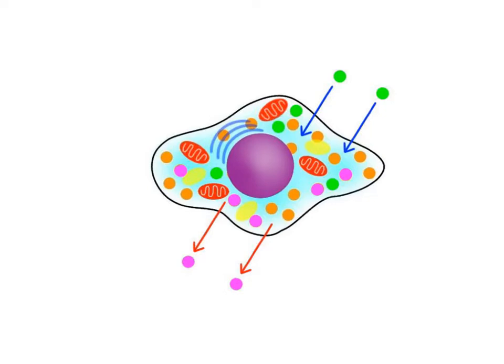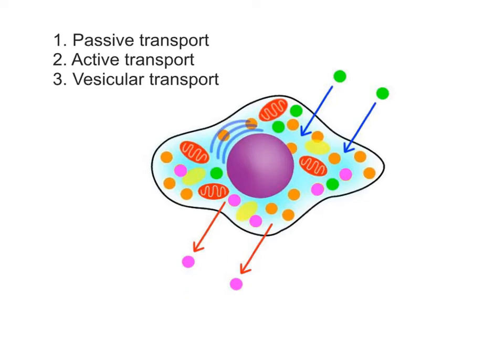Living cells require a diversity of chemical substances for their survival, and they must be able to transport these substances both into and out of the cell, across the membrane. The three major types of membrane transport processes that we see in cells are passive transport, active transport, and vesicular transport.